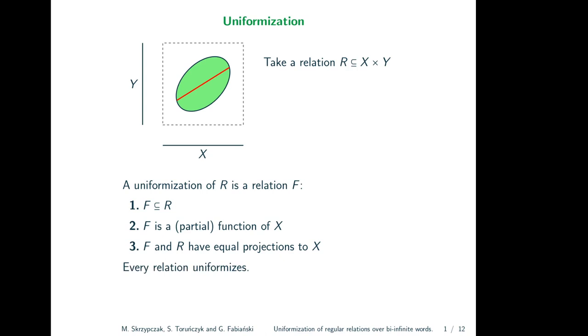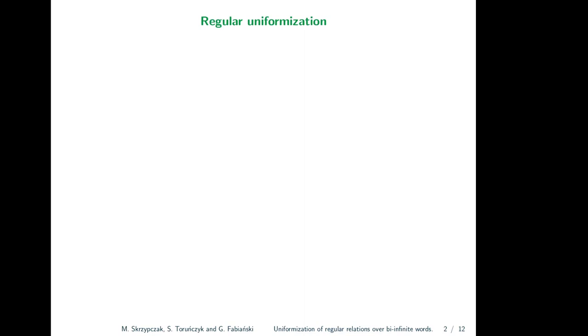It is easy to see that every relation has some uniformization — for each slice we need to pick any element, which is exactly what the axiom of choice allows you to do. In fact these two statements are equivalent. In this talk, however, we are not interested in uniformizations in general, but in regular uniformizations.